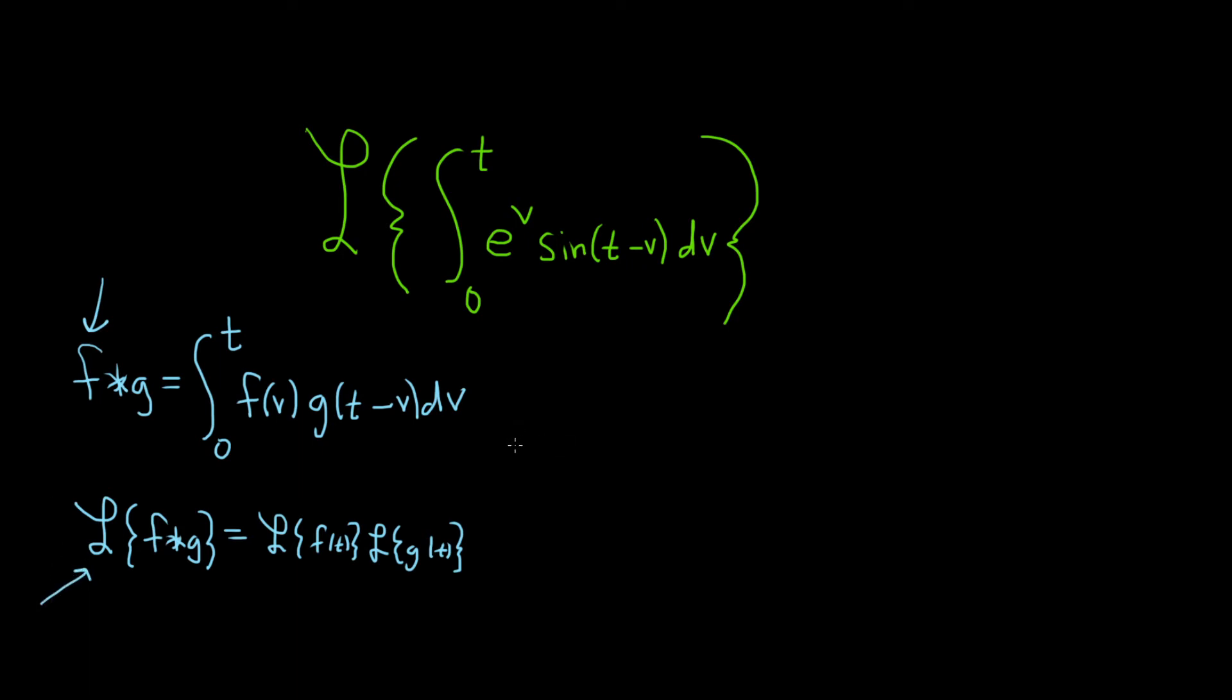So if we think carefully, we can notice that in this problem it looks like f of t is going to be e to the t. That's going to be our exponential function. And g of t, g of t is simply going to be the sine of t. This is the sine of t.